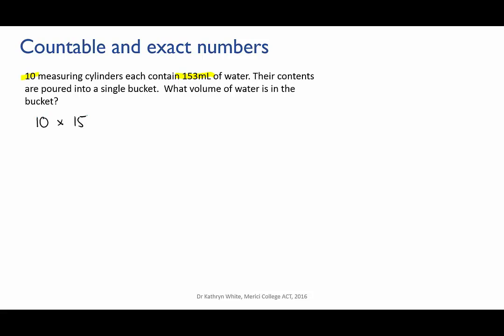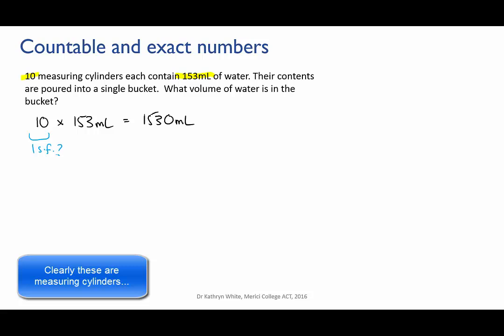The calculation is 10 times 153, giving the calculator answer of 1530 mils. But you might look at that and say, well the 10 only has one sig fig, so I should round that off to 2000 mils. But think about it.